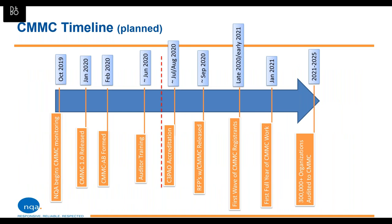On the timeline, going from 2019 through a five-year implementation period up through 2025, the goal was to have auditor training rollout around June 2020, with certification bodies being accredited around July–August 2020. Some RFPs were to start coming out in Q3–Q4 of late 2020, with the initial round of certifications in early 2021.